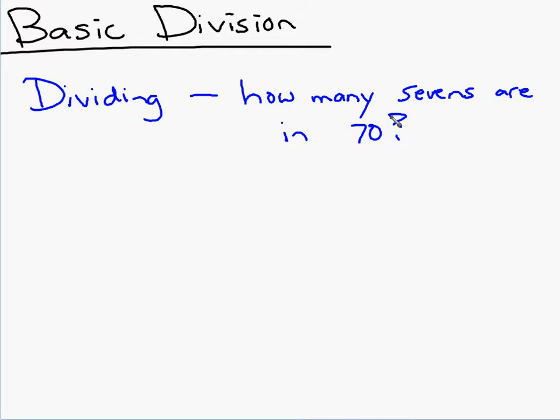How many sevens are in 70? So how many sevens are in 70? Can you answer that question? Ten, right? You just did division. That is a division thought process. The answer is 10.